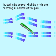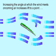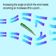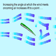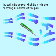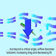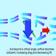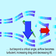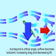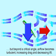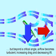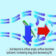The angle of the wings affects lift. Increasing the angle at which the wing meets the air can increase lift to a point, but beyond a critical angle, airflow will become turbulent, increasing drag and decreasing lift.